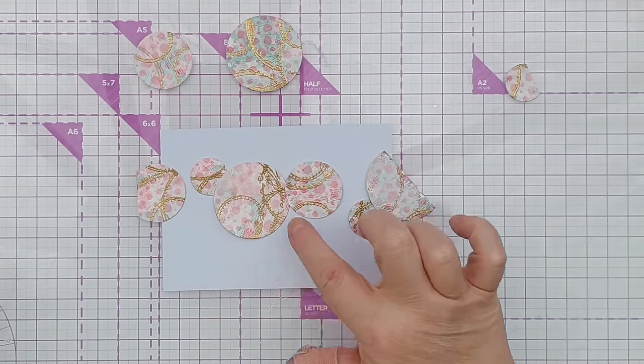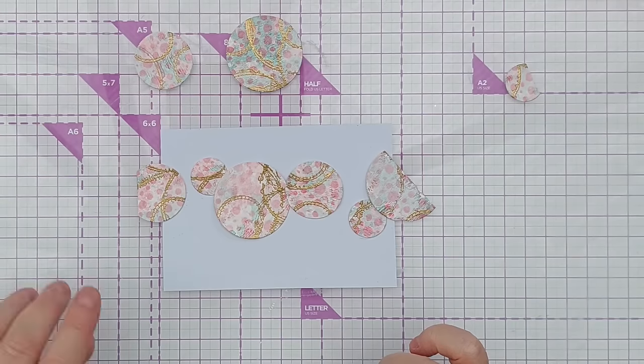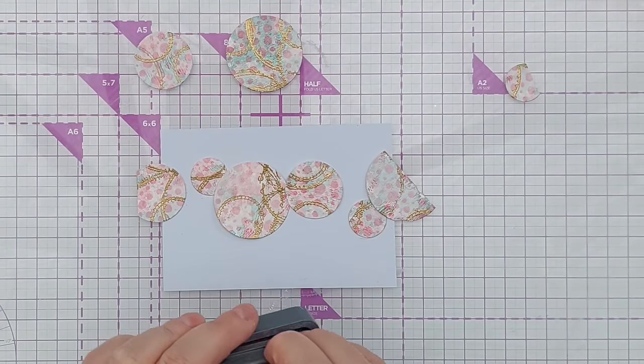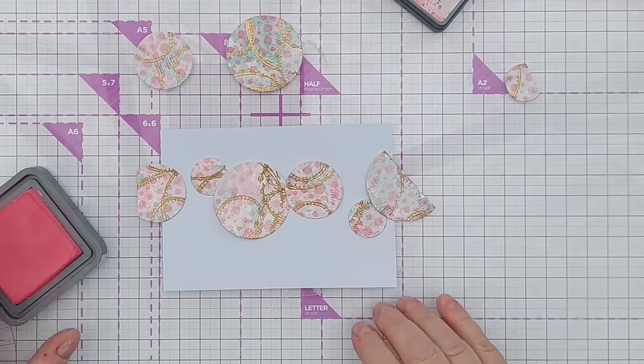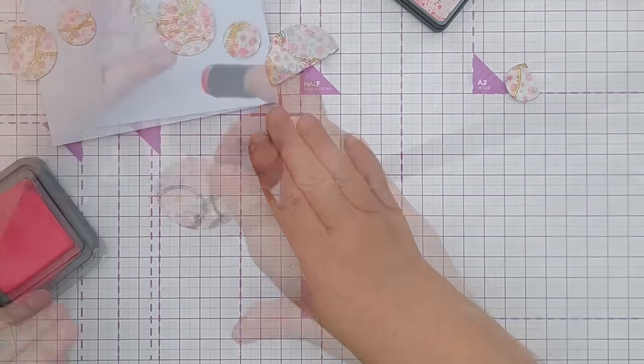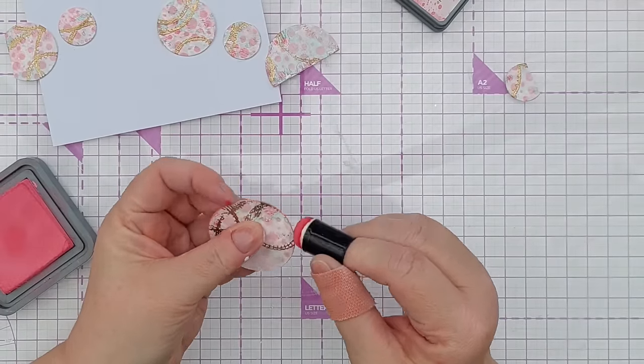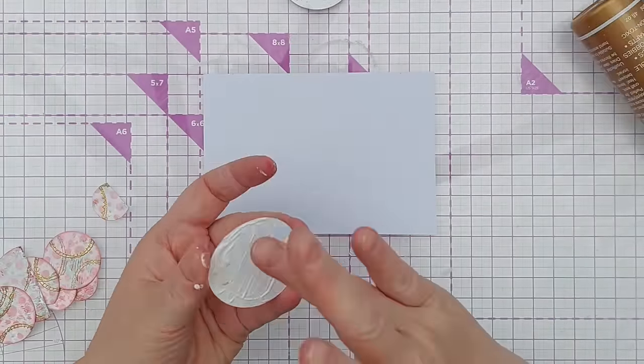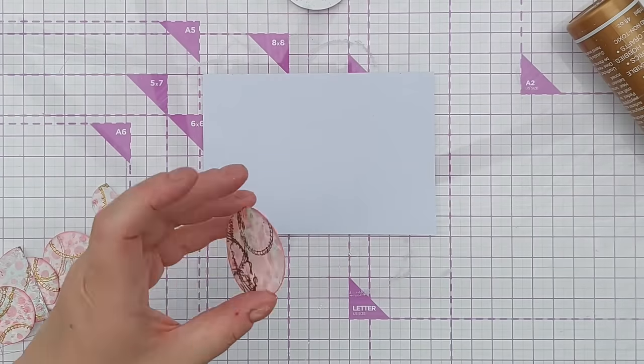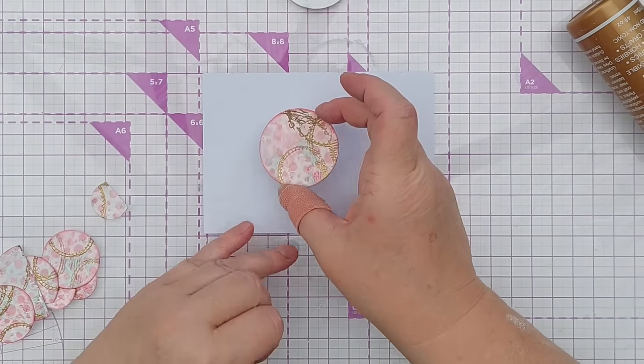I think I want to put a bit of an edge around them though. So I'm going to take one lipstick and a finger dauber and go around the edge of each one. So just give it a little bit of definition. I'm just going to put a bit of high-tech PVA glue on the back. Glue them to my card.